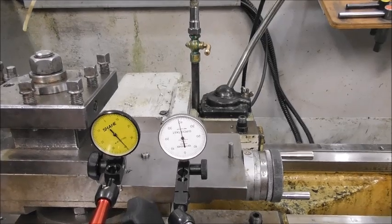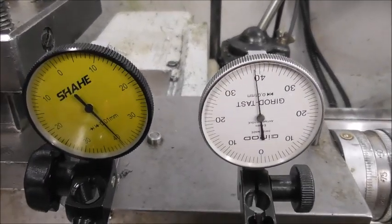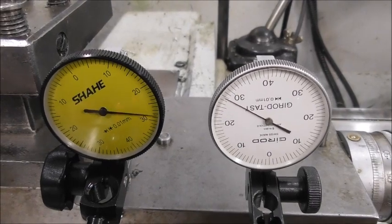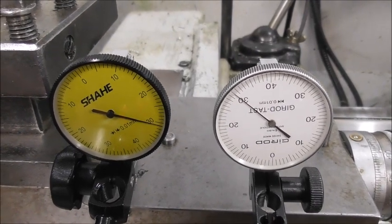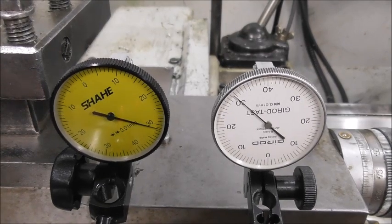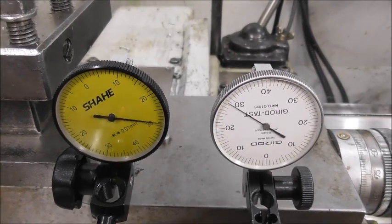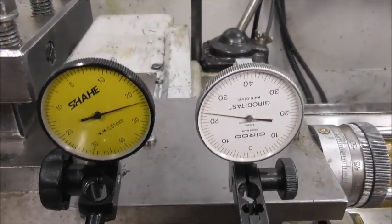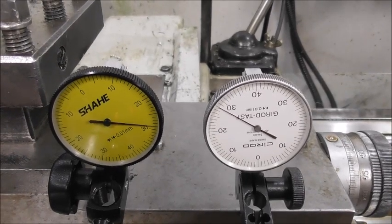And with these one hundredths indicators, which is approximately the same as half a thou, you can quite easily see two microns, even one micron of movement. So I don't really see the need for workshop use to go a little finer than that.